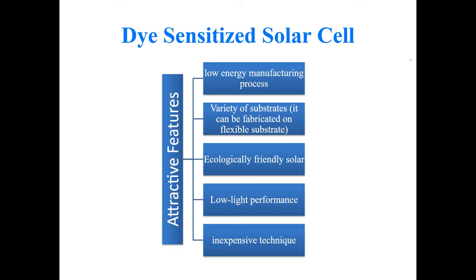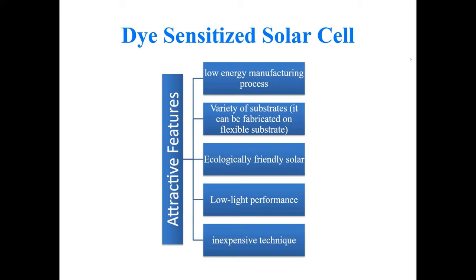The structure of a dye-sensitized solar cell contains four main structural elements: a transparent conducting electrode, a counter electrode, a thin semiconductor material, a dye sensitizer, and also an electrolyte.